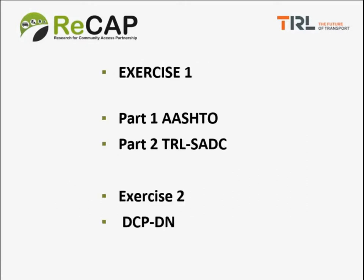We're going to do two exercises in this session. The first exercise involves two roads, A and B, and we're going to design them based on the AASHTO design method and also the TRL SADC design method. The second exercise involves designing a completely different road using the DCPDN method.